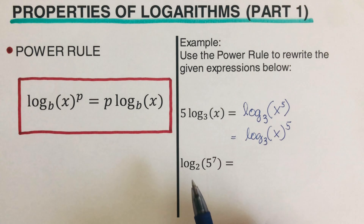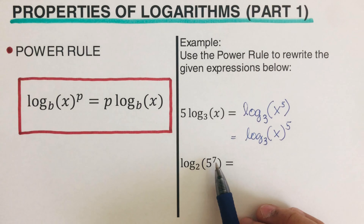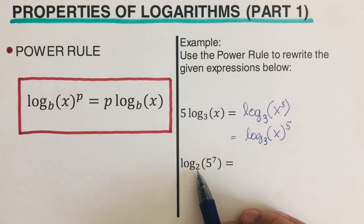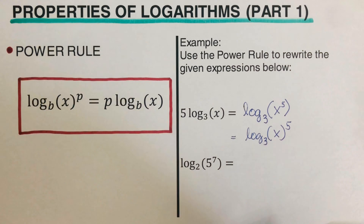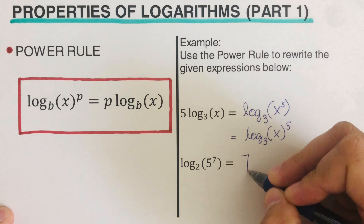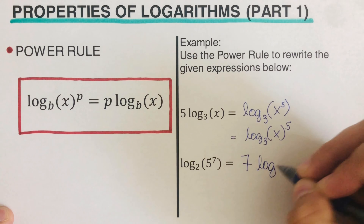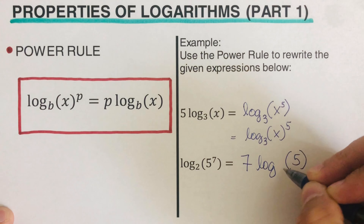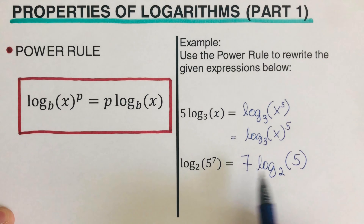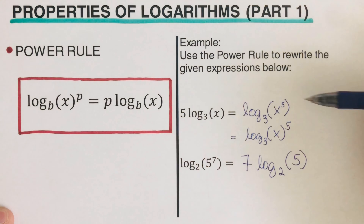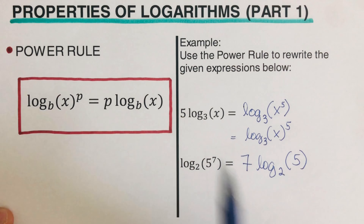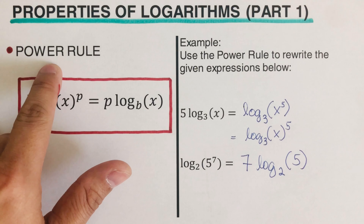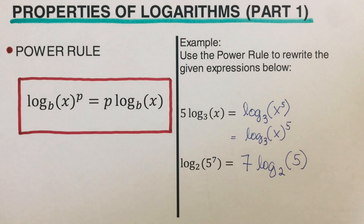Now let's move on to the next example: log of five to the power seven, to the base two. We remember that this exponent becomes the coefficient of the whole log expression. So we can rewrite this as seven log of five to the base two. These two are equivalent, and that is what we call the power rule of logarithms.